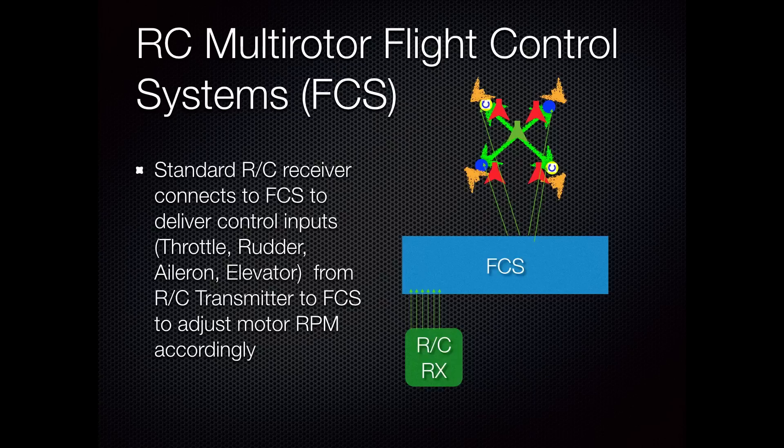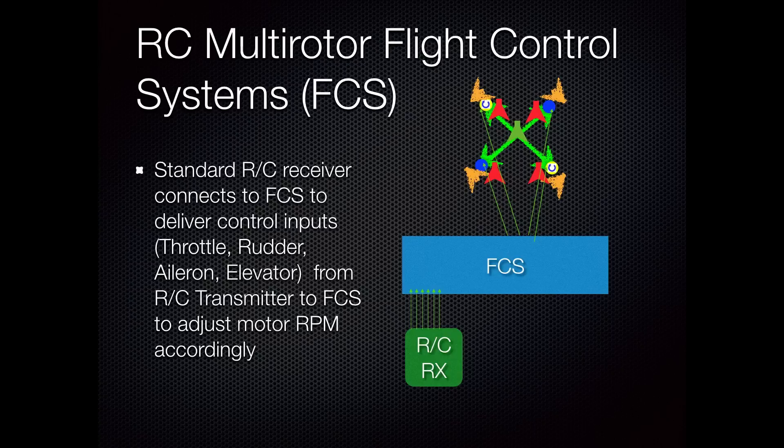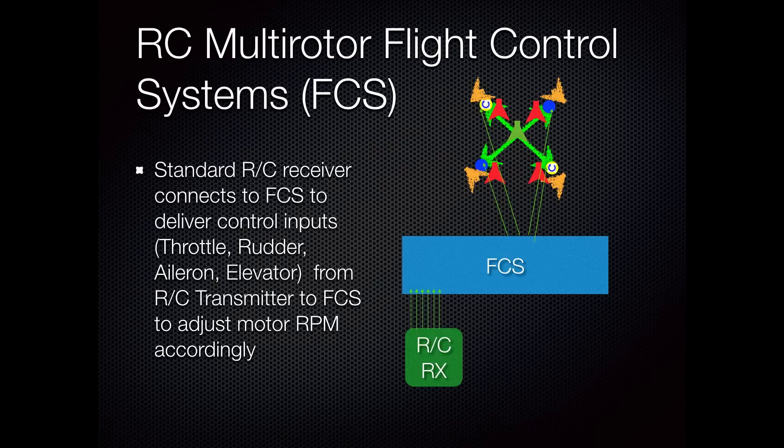So when you give it a pitch forward command with your right stick, the radio control receiver sends pitch forward information on the appropriate channel to the flight control system. The flight control system looks at that and says, 'Aha, I need to adjust the RPM on the back motors upwards and the front motors downwards,' which results in a pitch forward. All the other standard radio control functions work the same way: pitch, roll, rudder, and elevator.